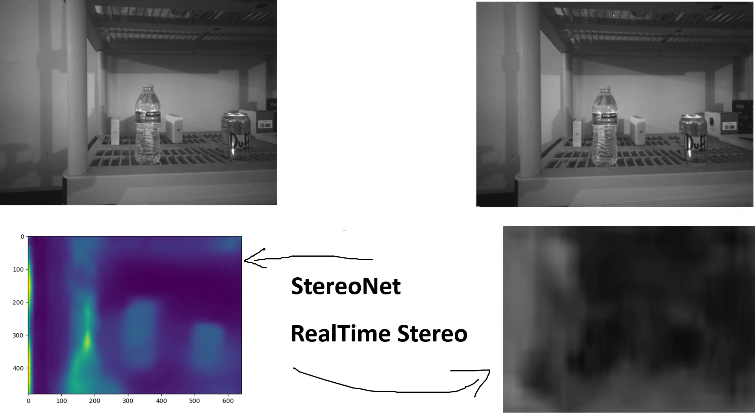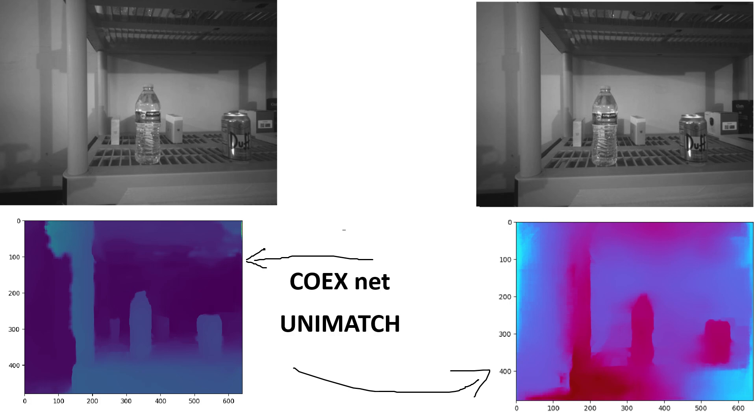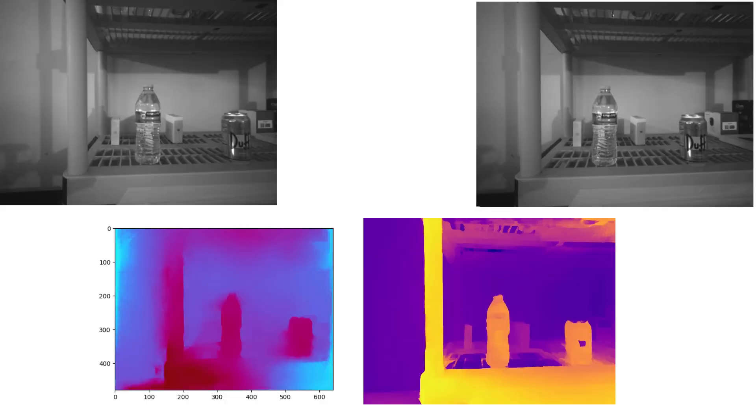The results are pretty disappointing. On RockChip, only very old networks (about six years old) worked — StereoNet and Real-Time Stereo. StereoNet is also the only stereo network that works on Hailo according to their documentation. The results from these networks were poor. Some networks work a little better: for example, CoEx on Huawei and UniMatch on Huawei. However, the same UniMatch running on my laptop gives dramatically better results.